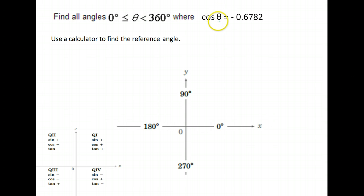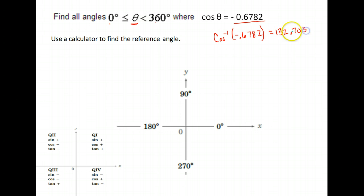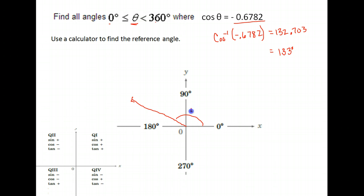Next question: we want the angles between 0 and 360 degrees where the cosine of theta is negative 0.6782. Again, our first step is to use our calculator to find what our reference angle is. We do the inverse cosine of negative 0.6782. Double check your numbers when you plug them in. You should get about 132.703 — rounding to the nearest whole degree, that would be 133 degrees, which puts us in the second quadrant. So one of our answers is 133 degrees.